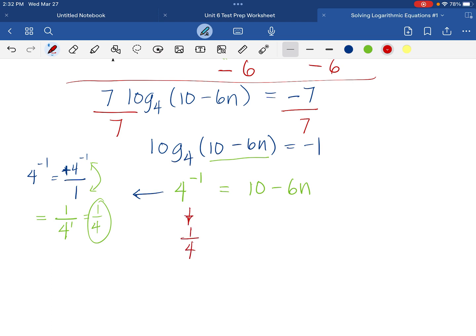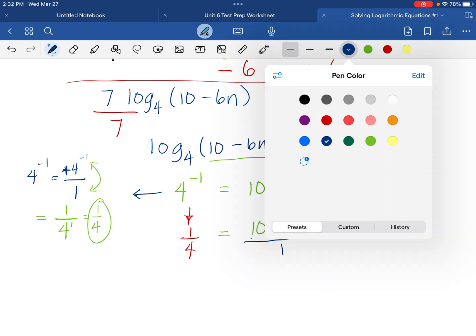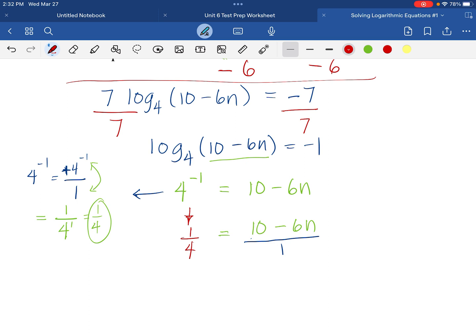We drop down the right side of the equation, which is 10 minus 6n. However, the left side of the equation is a fraction. So, we want to make this right-hand side as a fraction by writing over 1.